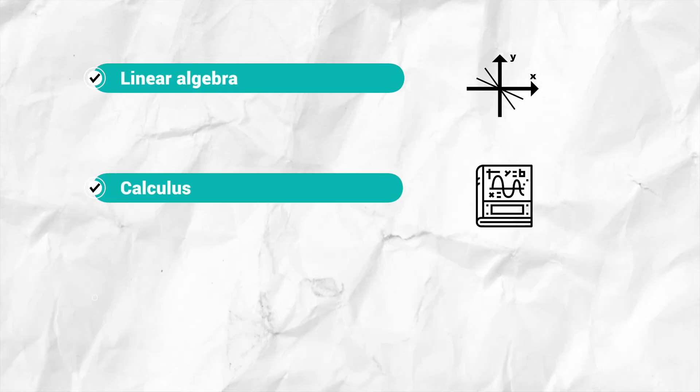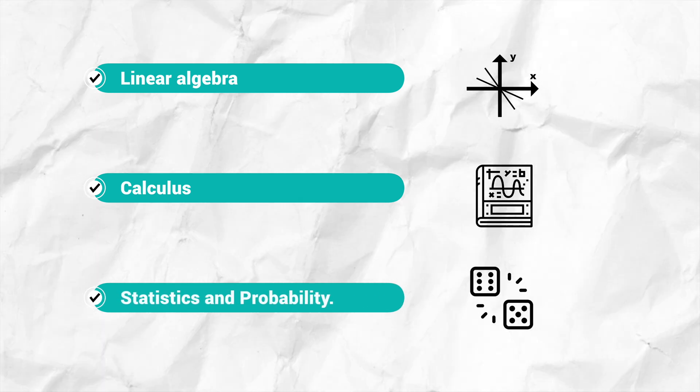Mathematics is very broad, but the good news is there are only a few areas of mathematics that we most often use as a data scientist or data analyst. They are linear algebra, calculus, statistics, and probability. Statistics is probably more under science than math because it relies on real-world data, but let's include it here for completeness.